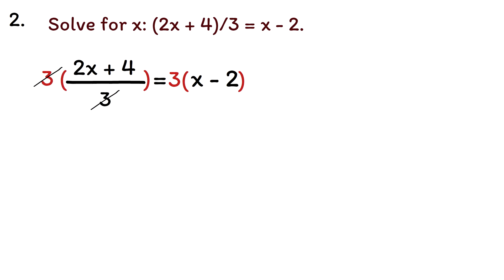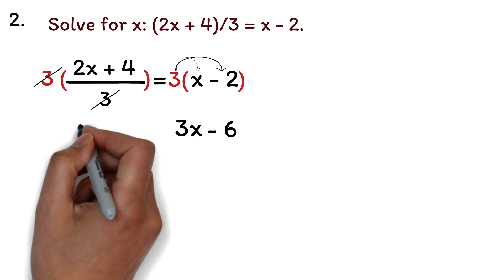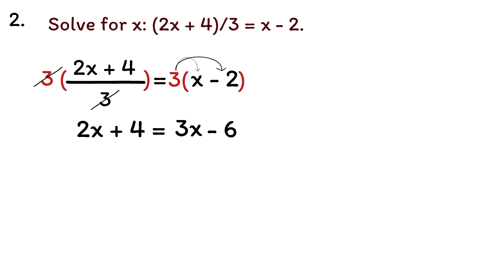Next, we can distribute the 3 on the right side of the equation. 3 times x is 3x. And 3 times negative 2 is negative 6.